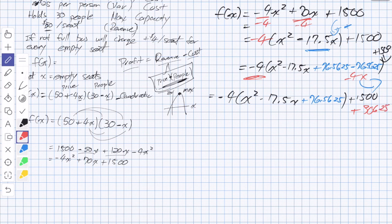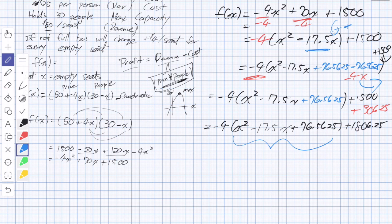We actually take the negative value out of the brackets, and we're going to combine it. We'll have negative 4 times x squared minus 17.5x plus 76.5625, and when it comes out, we still have to multiply by that coefficient. So we take that value and multiply it by negative 4. So it's going to be 1,500 plus 76.5625 times 4. Plus 306.25. What's 306.25 plus 1,500?